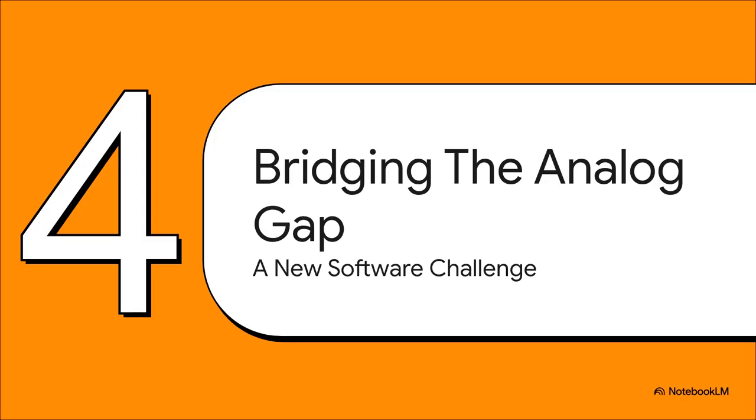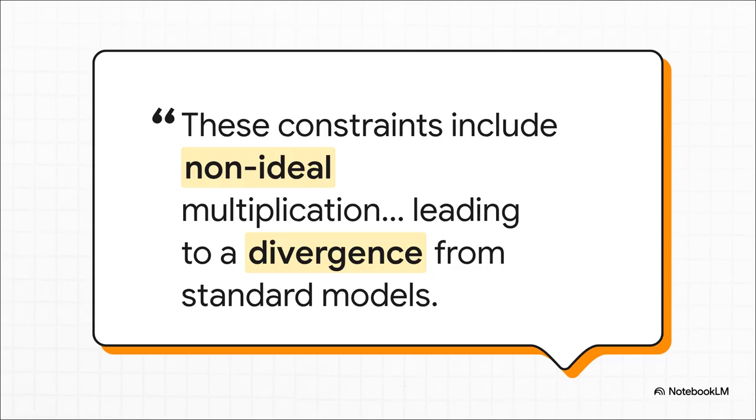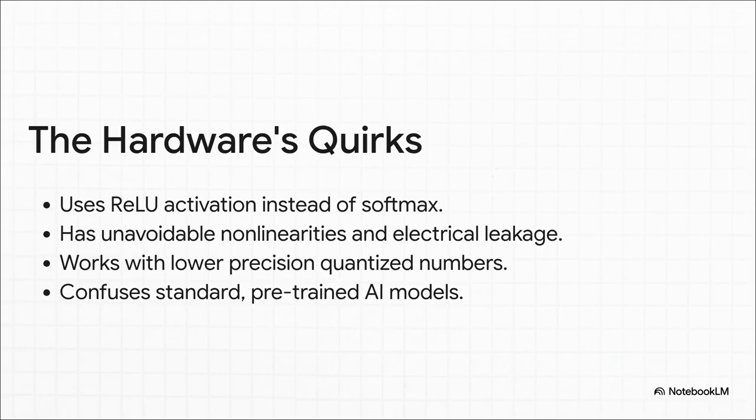Okay, so we solved the energy crisis, right? We're done? Well, not so fast. This new analog hardware is unbelievably efficient, but it's also imperfect. And that creates a whole new world of problems for the software. The researchers put it perfectly in their paper: this hardware has non-ideal characteristics. What that really means is it just doesn't behave like the clean, perfect, predictable digital world that AI models like GPT-2 were trained in. So you can't just take your existing AI software and expect it to run. It won't. It'll just fail. So let's break down these quirks. For starters, the chip uses slightly different math. It has tiny, unavoidable imperfections and electrical noise. And it works with numbers that are less precise. These aren't bugs. It's just the nature of this kind of analog hardware. But for a standard AI model, it's enough to cause total confusion.